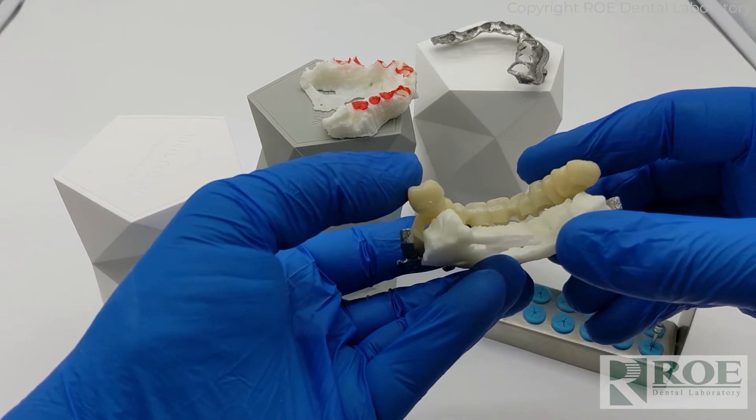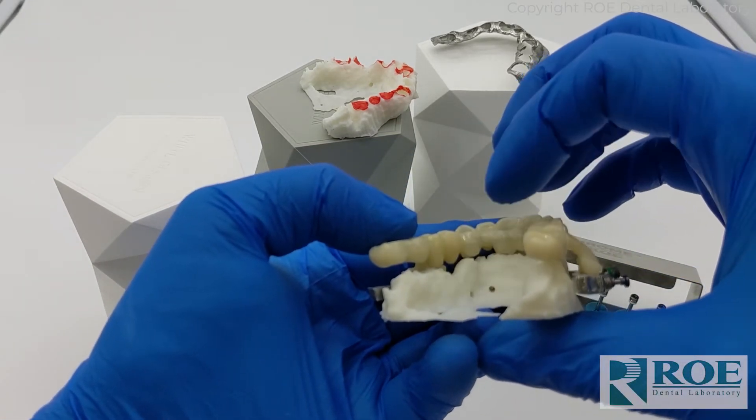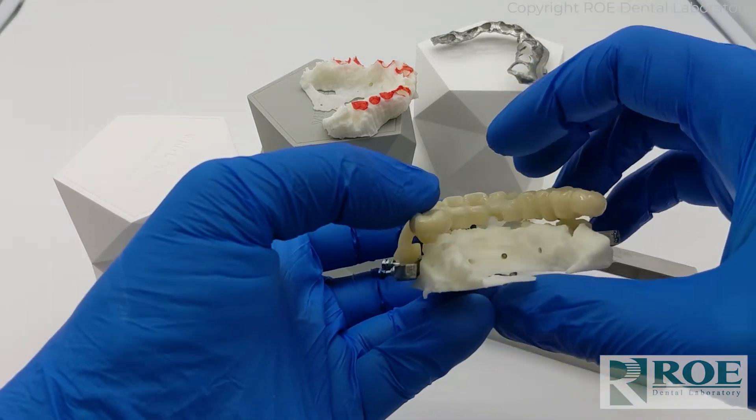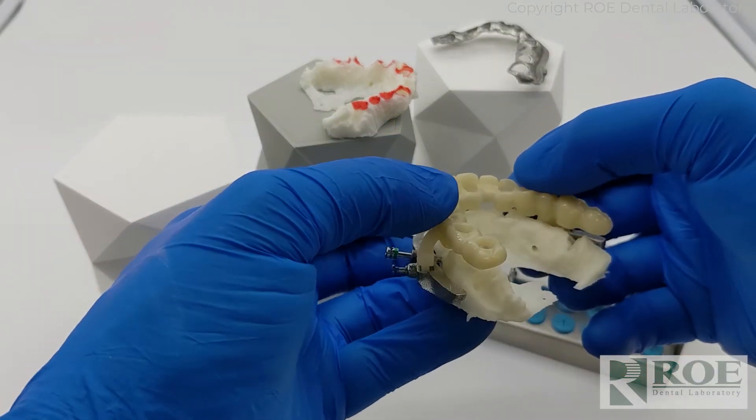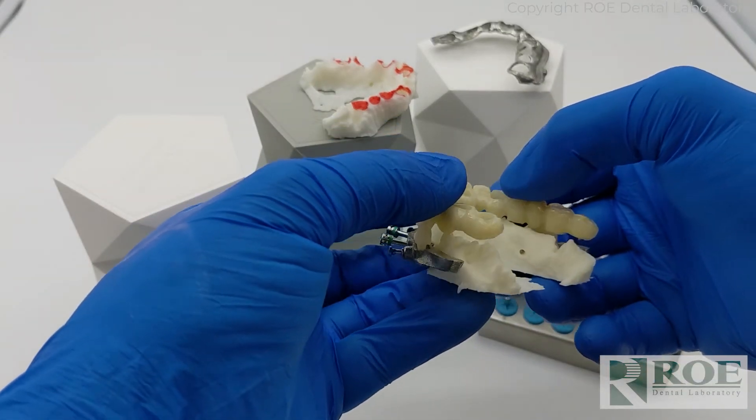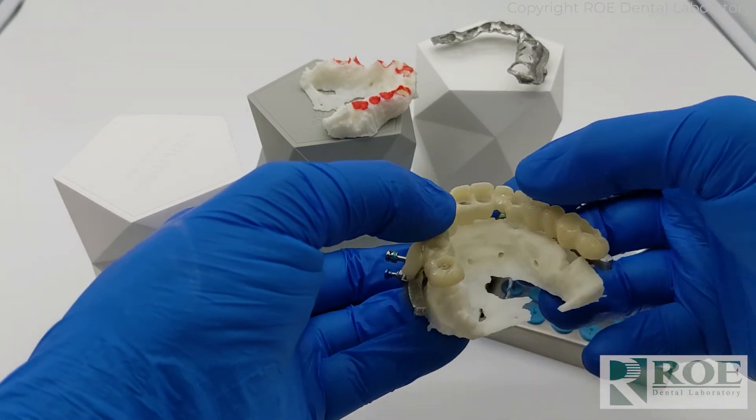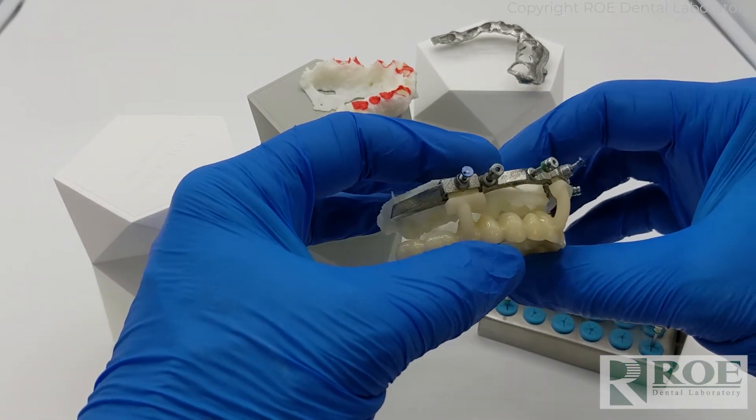You'll see here underneath pontic needs adjusted right at that site under number nine and then a little bit under 12, 13. You can see those were the sites we also adjusted. When you're in the mouth during surgery, you will notice where it's not passive and that's where to adjust it.